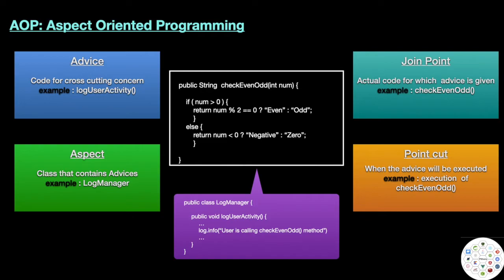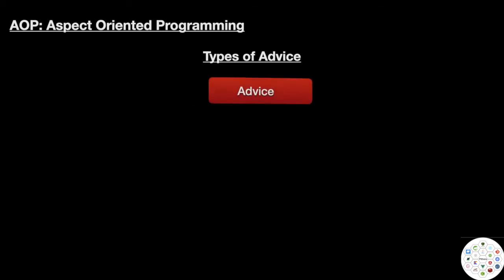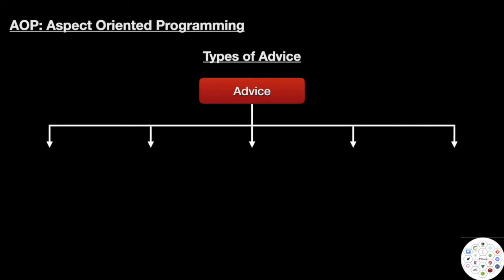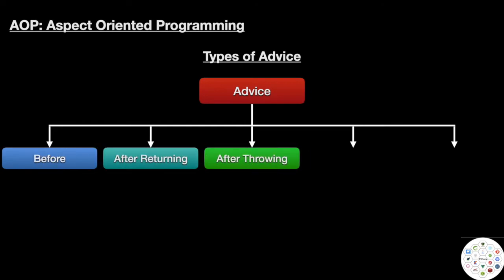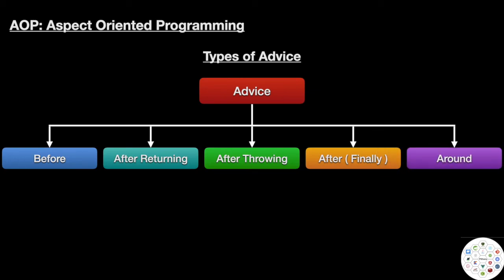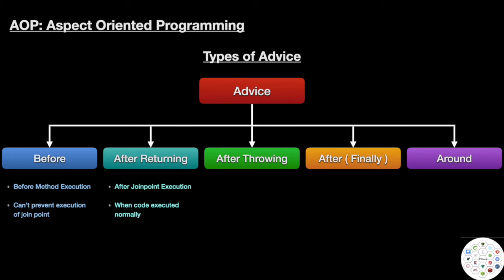There are five types of advice. The first is 'before' — advices of this type are executed before the joint point and cannot prevent execution of the joint point. The second is 'after returning' — advices of this category are executed after the joint point is executed successfully, without any exception or error.